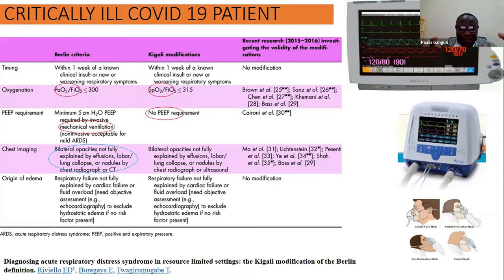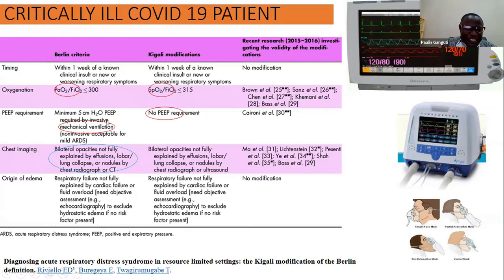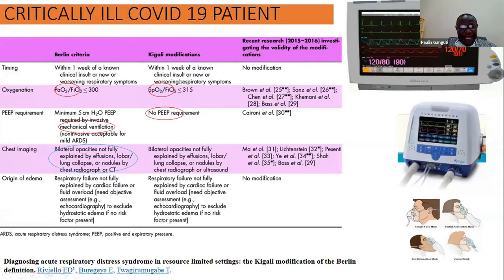There is a quick test to diagnose acute respiratory distress syndrome called the Kigali modification. In the past, using the Berlin criteria, clinicians used to wait until they had a partial pressure of oxygen to find the oxygenation ratio. You needed to be on mechanical ventilation with a PIP, then use CT scan and X-ray — typical of a highly developed country. In many low-income countries, we don't have a blood gas machine to get the PaO2. Very few patients will be on a ventilator and CT scan doesn't exist or takes too long.